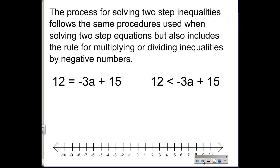So if we're looking at the equation here, 12 equals negative 3a plus 15, the first thing we would do is minus 15, minus 15. That would give us negative 3 equals negative 3a, and then we would divide by negative 3 and negative 3, and I'd have an a that's equal to positive 1.